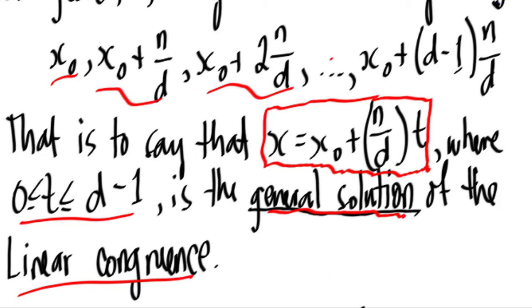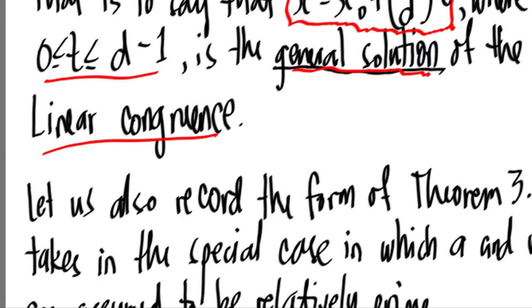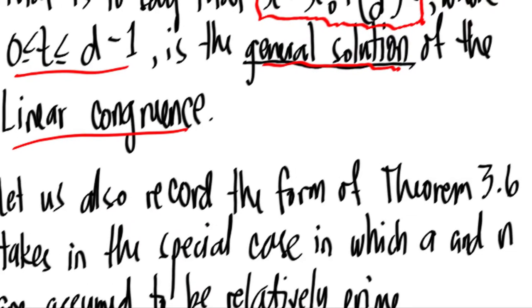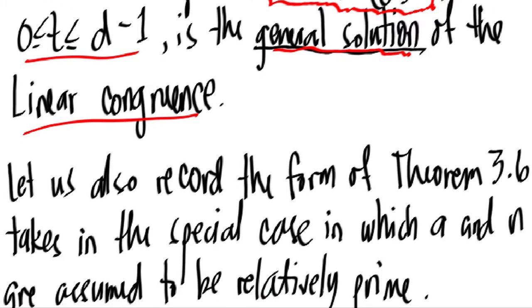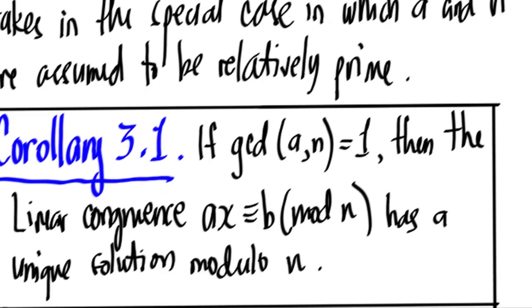Let us also record for your convenience the form of Theorem 3.6. It also takes a special case when a and n are assumed to be relatively prime. We will call this a corollary from Theorem 3.6.